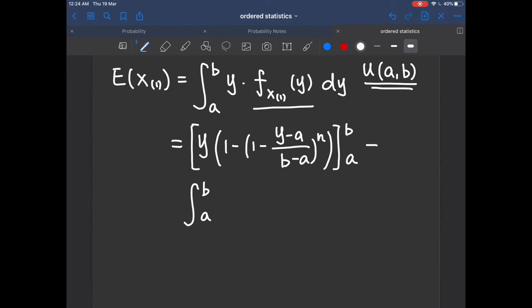So if you do integration by parts, you will realize that you just need to compute this integral, which honestly isn't that hard. So after this integration by parts, if you do everything carefully, you should arrive at the answer that the expectation of X1 is just a plus b minus a divided by n plus 1.